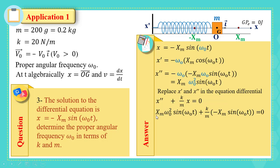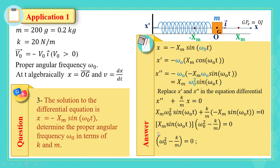Replace x'' with x_m·ω₀²·sin(ω₀t) and replace x with −x_m·sin(ω₀t), giving x_m·ω₀²·sin(ω₀t) + (k/m)·x_m·sin(ω₀t) = 0. Factoring out x_m·sin(ω₀t), which is not zero, we get ω₀² − k/m = 0, thus ω₀² = k/m and therefore ω₀ = √(k/m).